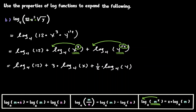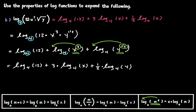So we are done. What we are saying is that this initial expression can be written as the following expression. One thing I want to point out: in the second example, our base was 4. So within the process of expanding, we have to write down the base of 4 every time we write the function of log, and that is still here in our final expression.